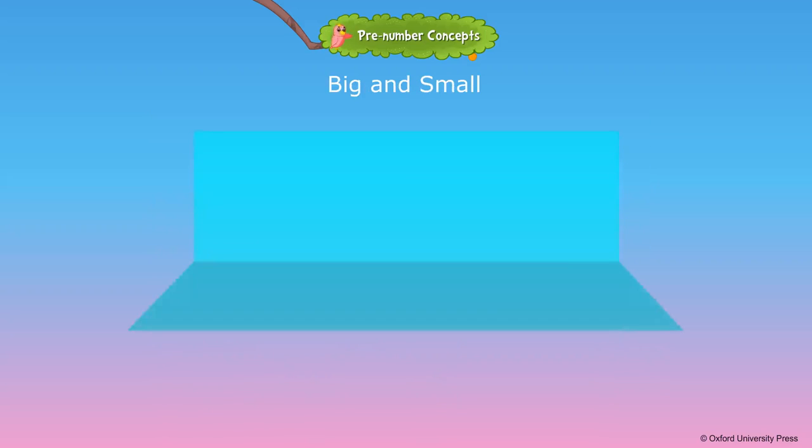Bigger and smaller. The apple is small. The watermelon is big. The watermelon is bigger than the apple. The apple is smaller than the watermelon.